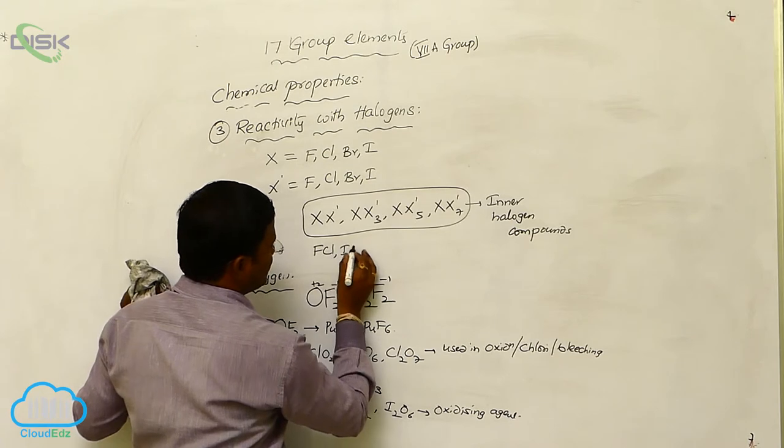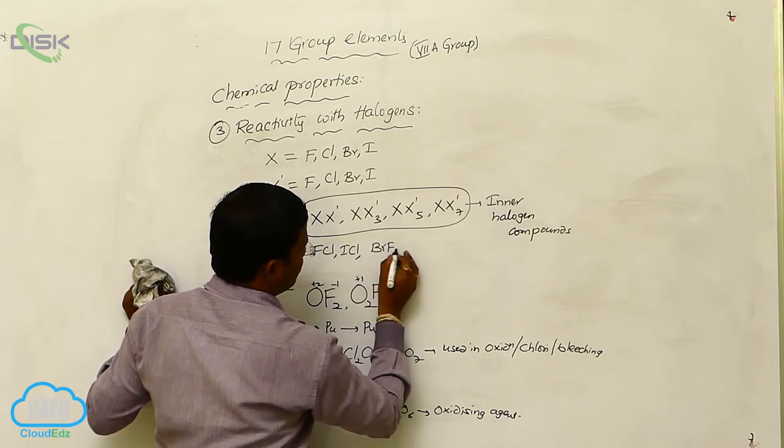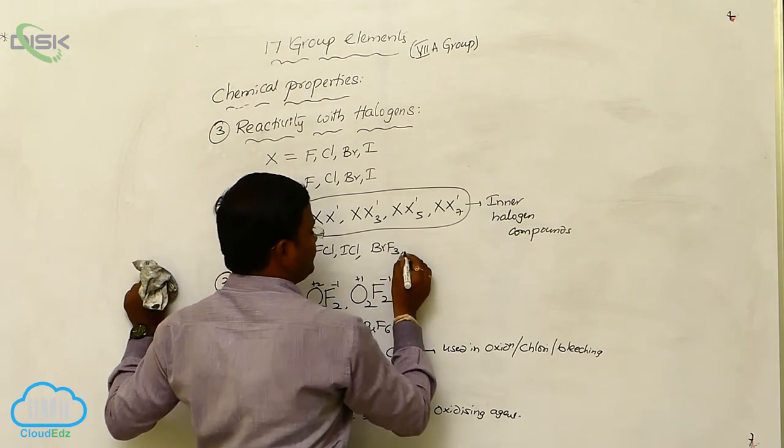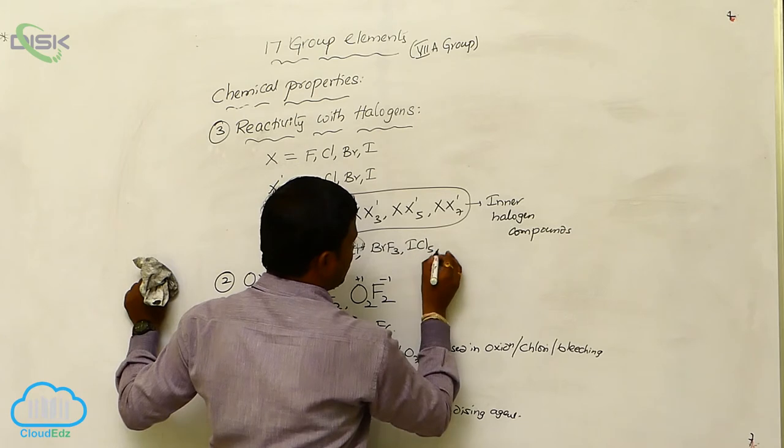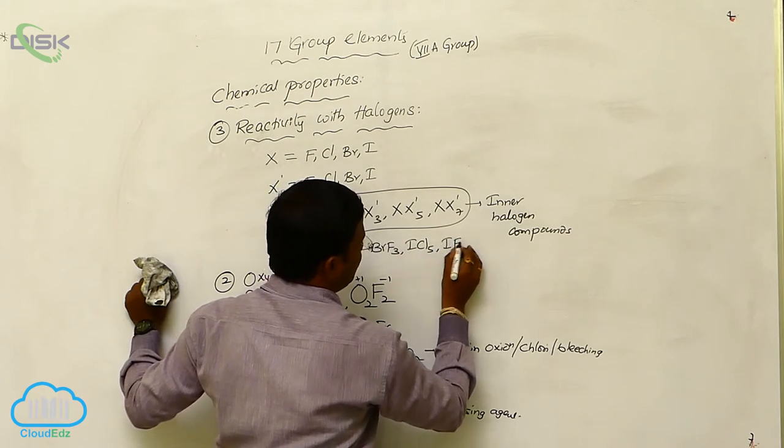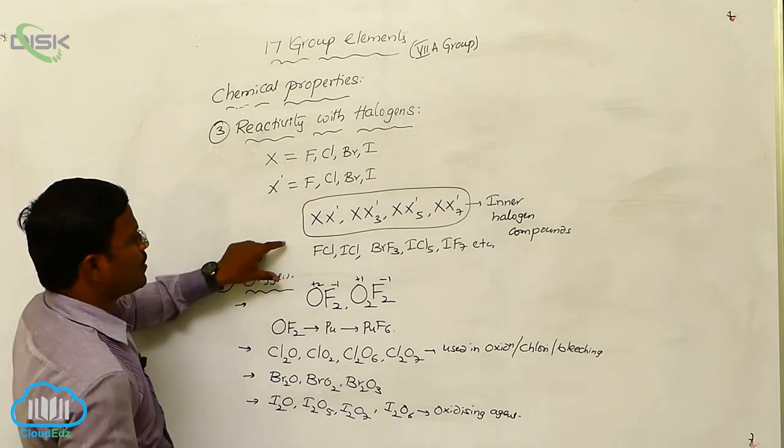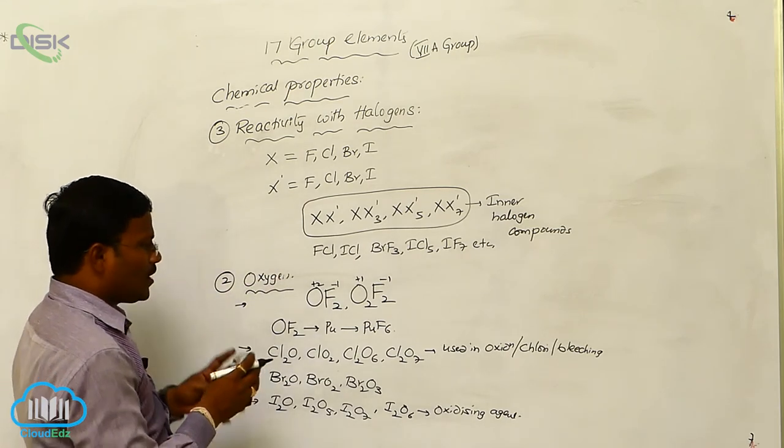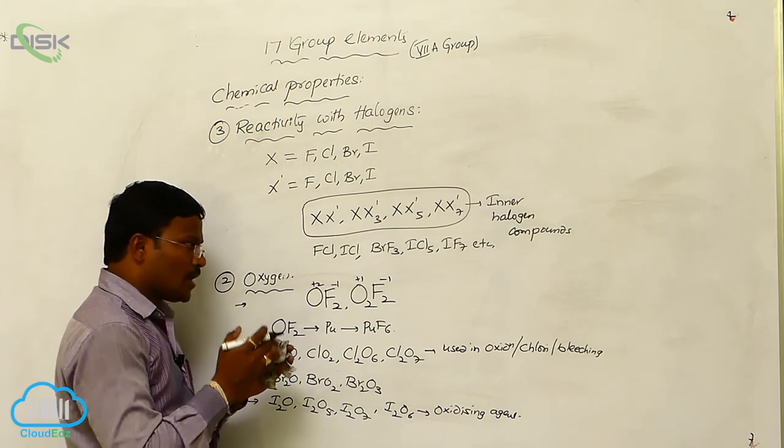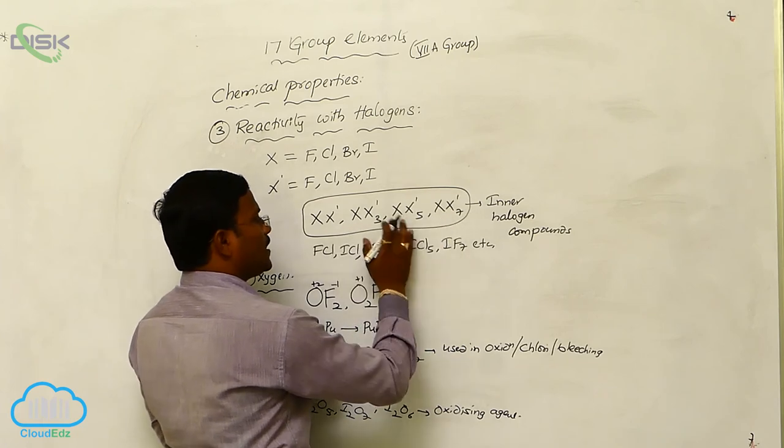Some examples are FCl, ICl, BrF3, ICl5, IF7, etc. So these are interhalogen compounds, that means reactivity or reaction of halogen with another halogen to produce different types of interhalogen compounds.